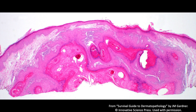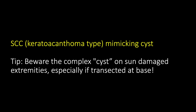Here's one — a distal extremity of an elderly sun-damaged patient. You see something that looks kind of like an epidermoid cyst or follicular cyst, whatever name you like for epidermal inclusion cyst, but it's a little bit complex. When I see a complex cyst, particularly on the extremity of a sun-damaged person when I can't see the base, that worries me for either squamous cell carcinoma or keratoacanthoma. The tip here is: beware the complex cyst on sun-damaged skin, especially if you can't see the base of it.